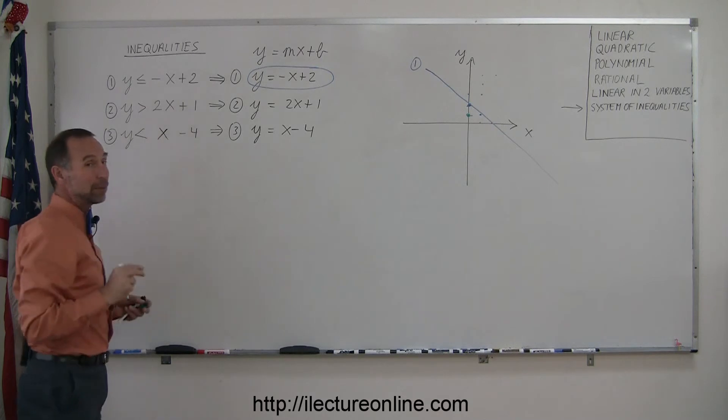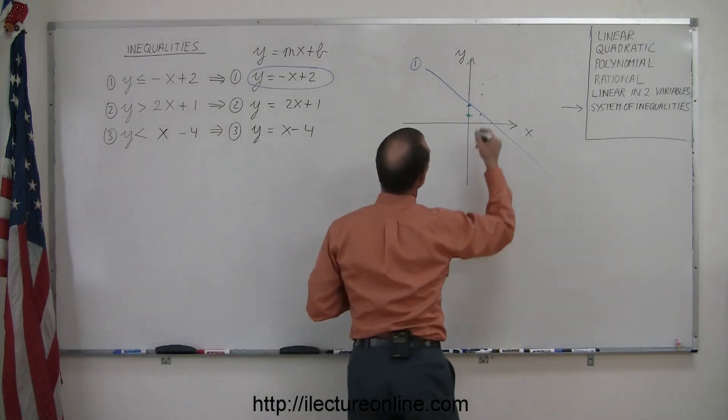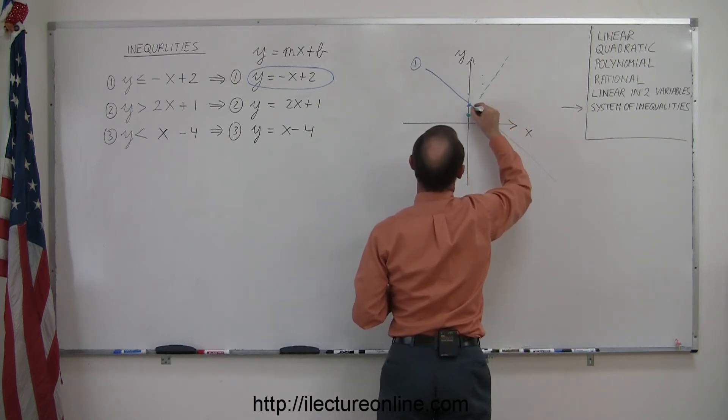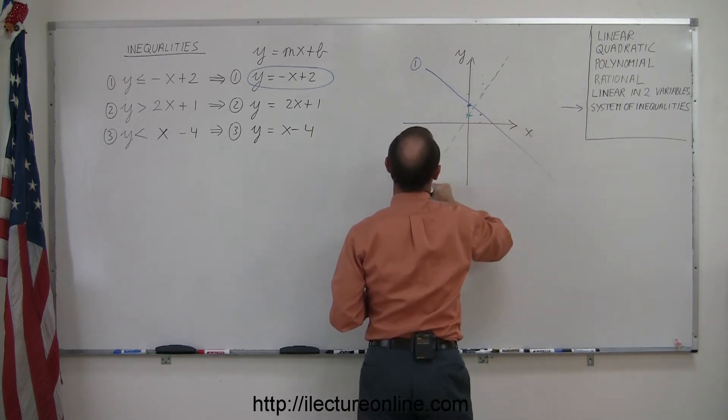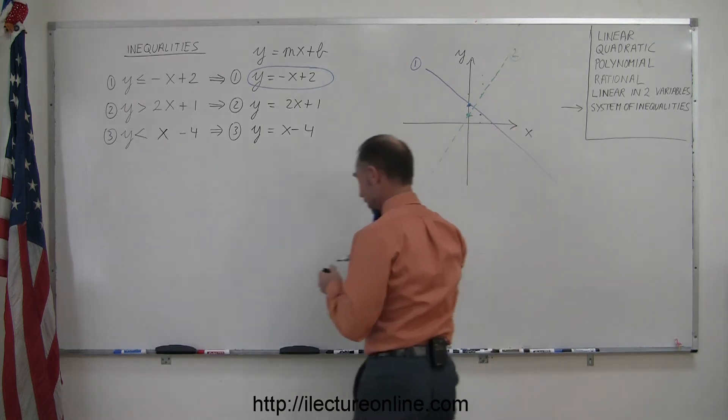Here you can see that there's no equal sign, meaning that the boundary is not included in the solution, so we want to draw a dashed line. Like so. So this is the boundary for inequality number 2.